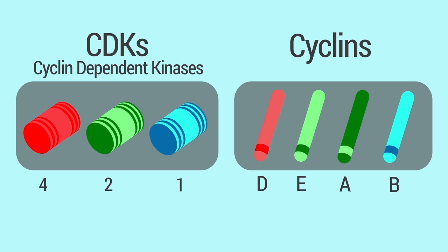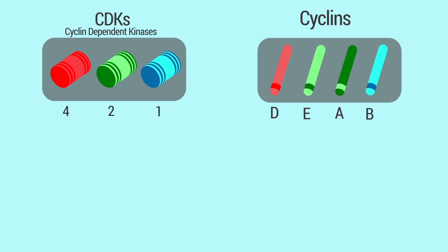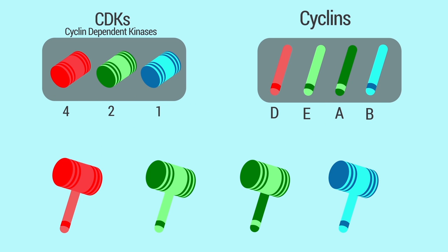Cyclin levels vary throughout the cycle. In contrast, cyclin-dependent kinases are always present, but they are only active when bound to their corresponding cyclin. The resulting complexes have various effects, but all of them affect DNA replication and cell division.